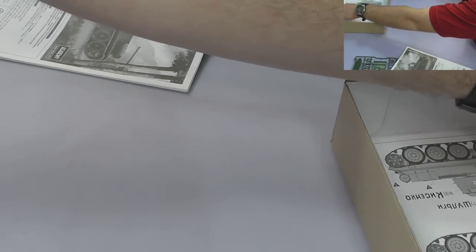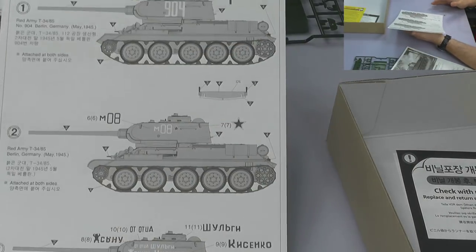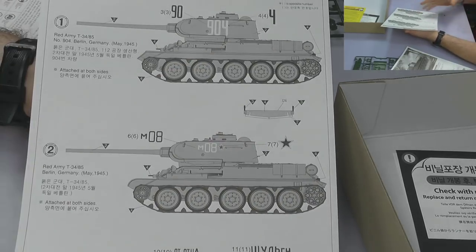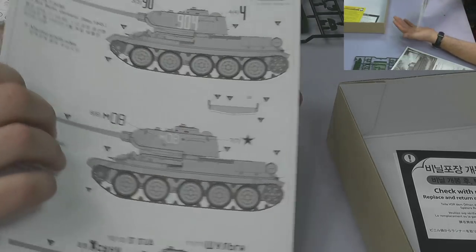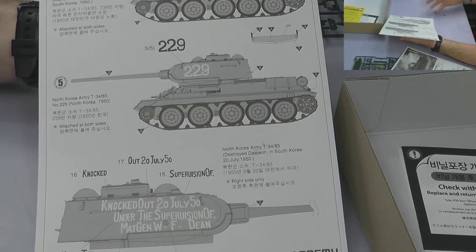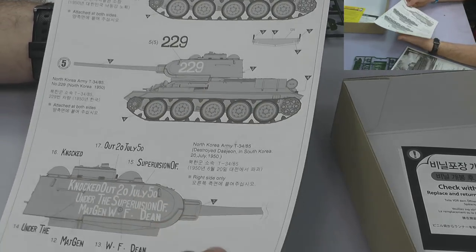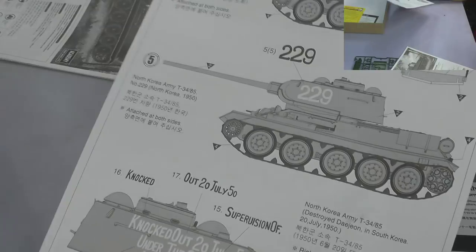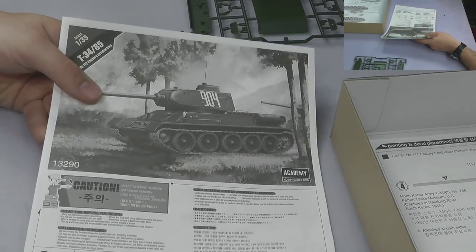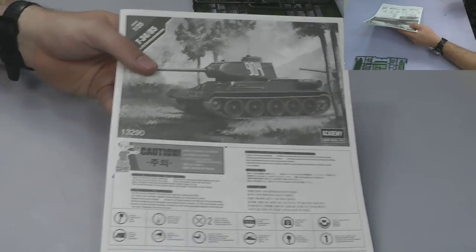And then we come to the instructions. Well, first off, we have some markings going on here. Color schemes and different markings where all your decals go. We've got enough to do six different tanks going on here. Three of them are like the Korean War, and the other three are World War II. Then we have our instructions.